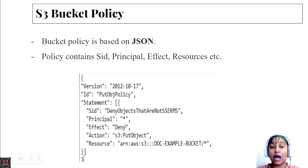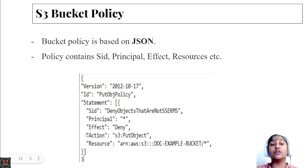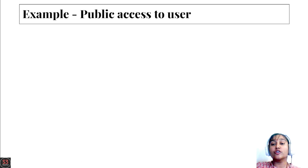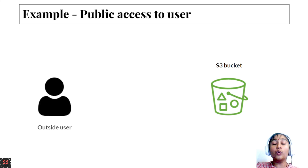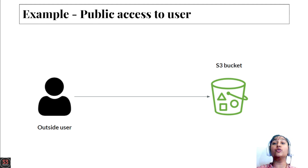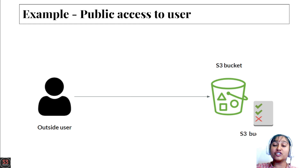So this is the bucket policy example — four important parameters: principal for the user, effect to allow, action to define the operation, and resource to provide the bucket ARN. Now let's move to a real-time example to understand why we need a bucket policy. Here we have an S3 bucket and an external user who wants to access objects in our bucket, so we create a bucket policy to grant public access.